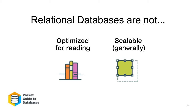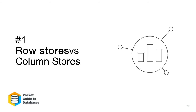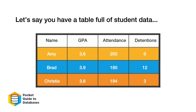Now let's get into how transactional databases work — or more specifically, why transactional databases are optimized for transactions. The first reason is because they're row stores rather than column stores. Think of a row store like this: you have a table of student data with columns for name, GPA, days attended, and number of detentions. A row store stores every individual student's record — name, GPA, attendance, and detentions — as one single row, one single object.